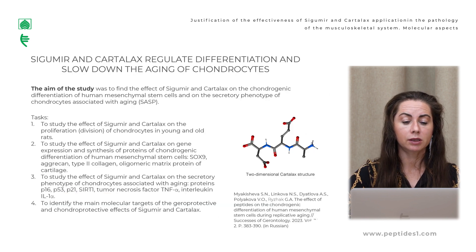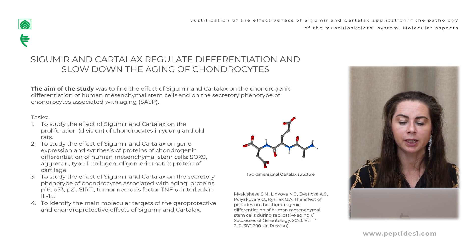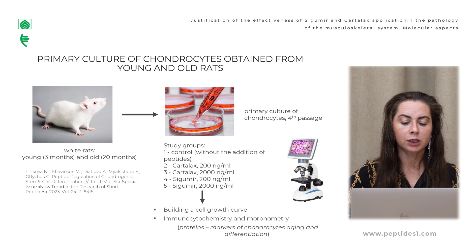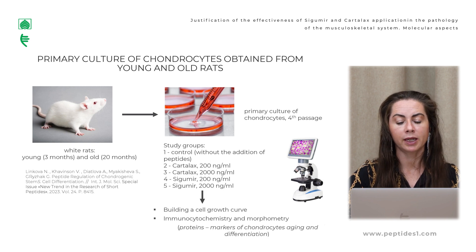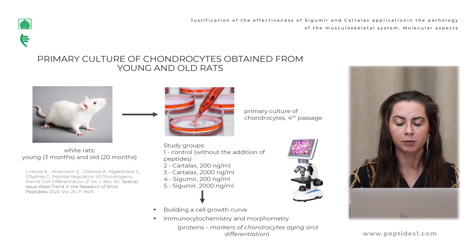We conducted a study to determine the molecular mechanism of Sigumir and Cartelax activity. For this goal, we performed experiments to understand how these peptides regulate differentiation of human mesenchymal stem cells and influence the secretory phenotype of chondrocytes associated with aging. The first experiment was done in white rats — young animals at 3 months and old animals at 20 months. We extracted cartilage from rats and performed primary culture of chondrocytes. Study groups included a control without peptides, two groups with Cartelax at various concentrations, and two groups with Sigumir peptides also at two concentrations up to 2,000 nanograms per milliliter.